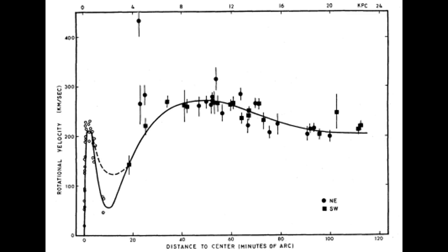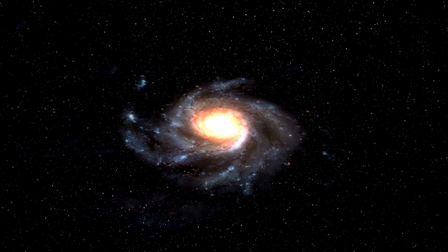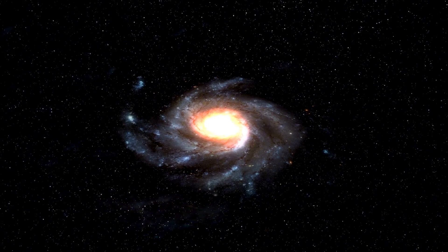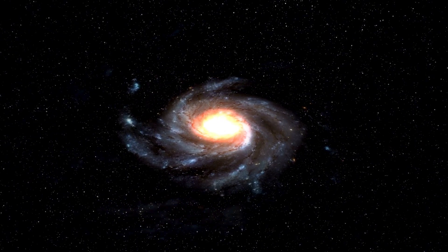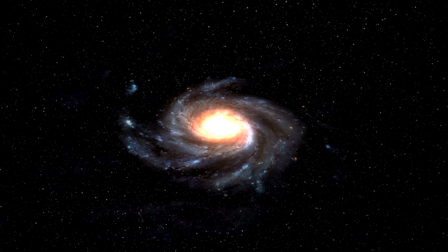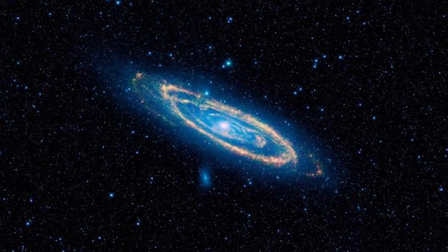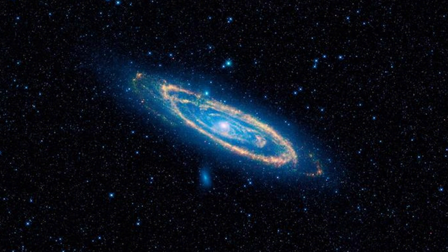Stars at the outer edges of galaxies were moving at the same speed as those closer to the center. This defied all expectations. According to the laws of physics, stars farther from the center of a galaxy should orbit more slowly, much like planets in the solar system. But Rubin's findings suggested that galaxies were rotating in a way that couldn't be explained by visible matter alone.